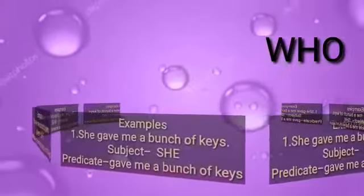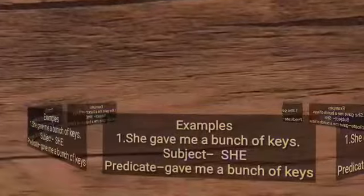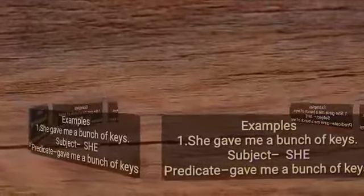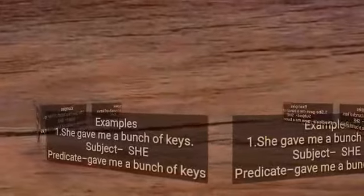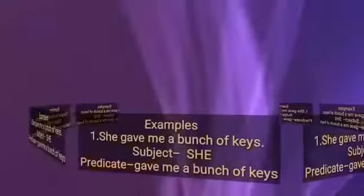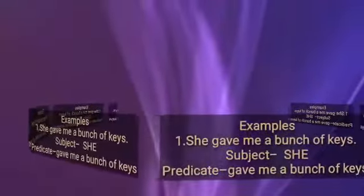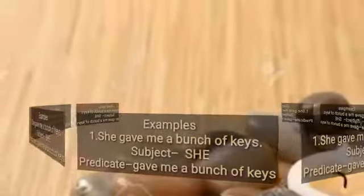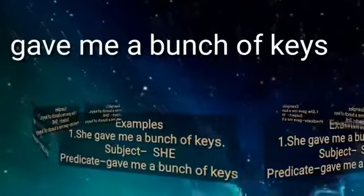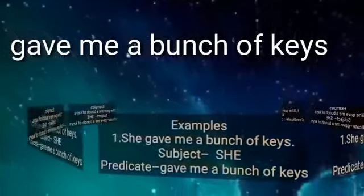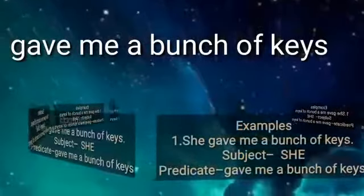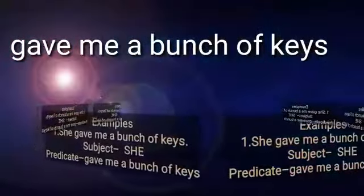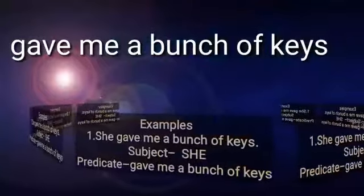The answer is 'she.' So this word 'she' becomes the subject as it answers the question 'who.' And the remaining words — gave me a bunch of keys — this group becomes the predicate. The part which explains or says something about the subject. So here, 'gave me a bunch of keys' says and explains something about the subject 'she,' so this phrase becomes the predicate.